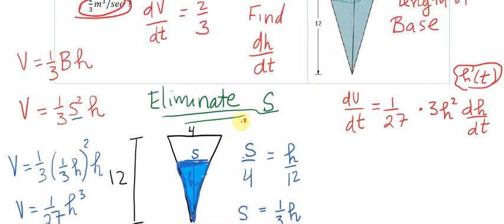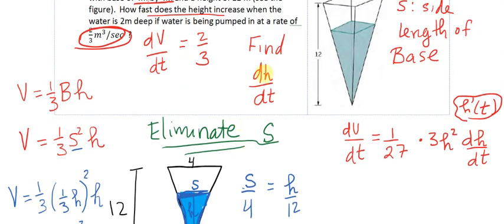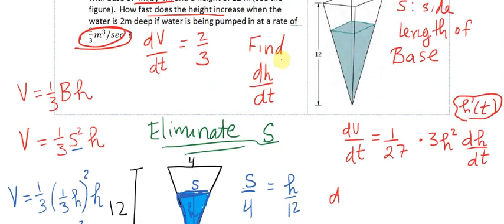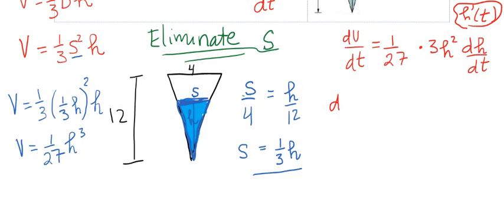Well let's recap. We want to find dh/dt, dV/dt when h, when the height is 2. So dV/dt we know from above is always equal to 2/3.